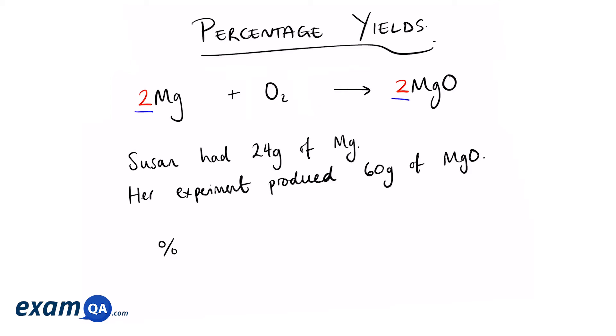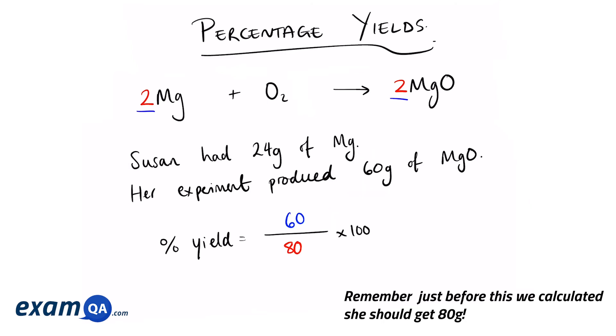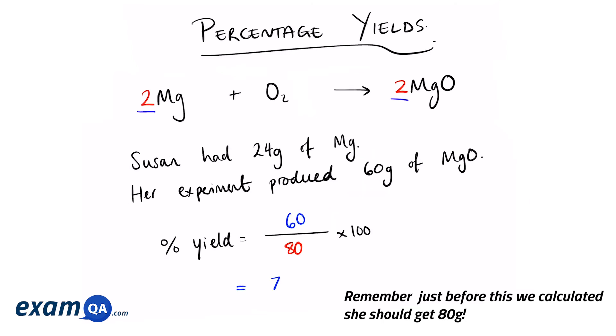Let's see if we can calculate the percentage yield of her experiment. So we're going to use the formula that we looked at before: actual mass divided by theoretical mass times 100. So we already calculated that for 24 grams of magnesium, you can theoretically produce up to 80 grams of magnesium oxide. Susan produced 60 grams, so this is her actual mass. Putting this into our equation should give us an answer of 75%.